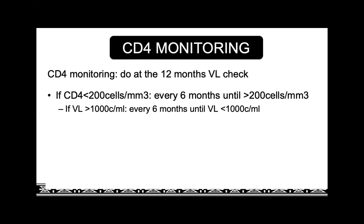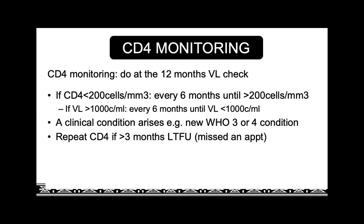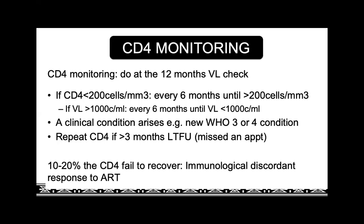If the viral load is over a thousand, you're going to check the CD4 every six months, because the CD4 might still be affected. If a new clinical condition arises — say the patient has a new stage three or four condition — then just do your CD4 again. And if a patient has missed treatment for three months, you would also repeat your CD4 at that point. Once the CD4 is over 200 and you've stopped your Bactrim, you're not going to repeat the CD4 count — saves us a bit of money.